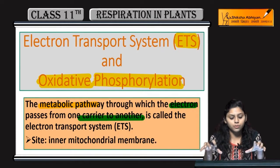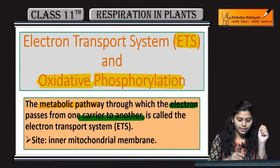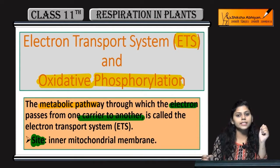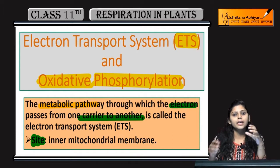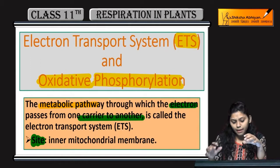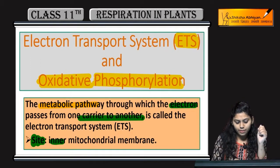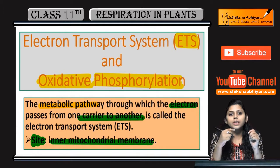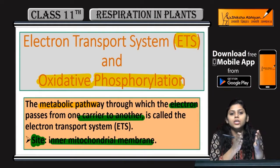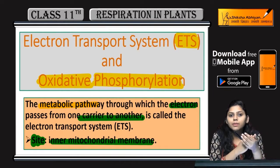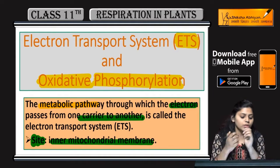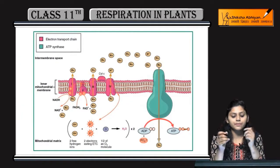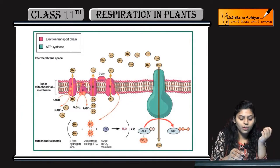Where does the electron transport system occur? Its site is the inner mitochondrial membrane. Mitochondria has two membranes — outer and inner — and it is in the inner membrane that the electron transport system works.